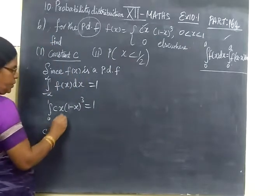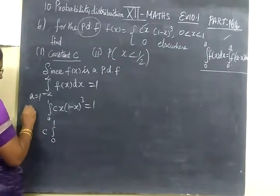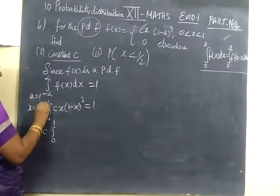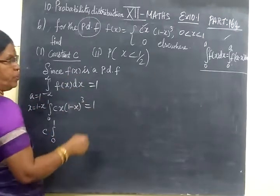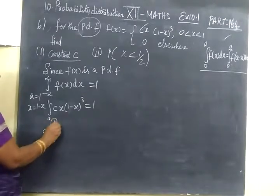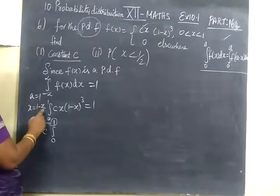So using the property, here a value equal to 1. Wherever x comes, you are writing upper limit this 1, minus x. Using the property, here a value equal to 1.